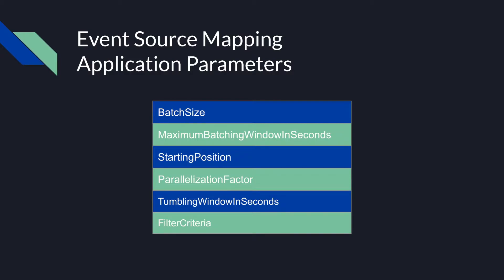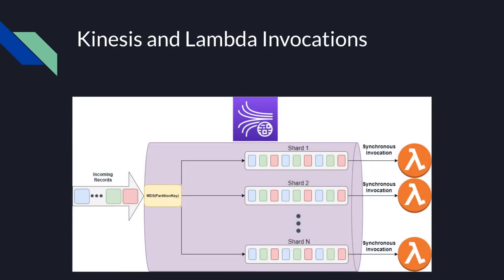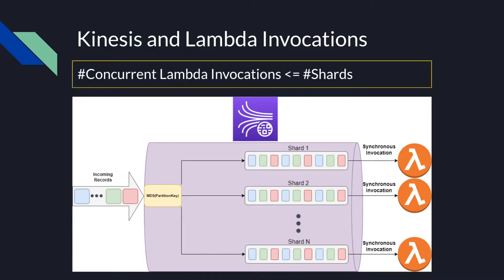It's important to understand that each shard in a Kinesis stream can be thought of as a separate queue with its own throughput limitations. Lambda handles this by invoking a separate concurrent Lambda invocation synchronously to read records from each dedicated shard. So by default, you will have as many concurrent Lambda invocations reading from your stream as you have shards. For example, in a 4-shard Kinesis stream, you will have at most 4 concurrent Lambda invocations by default.